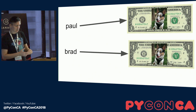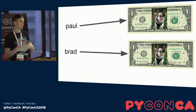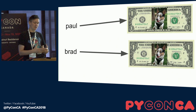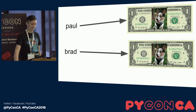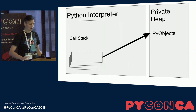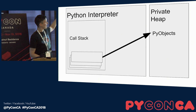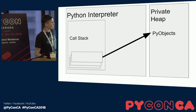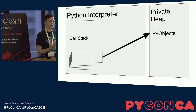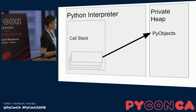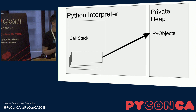To understand why this bug occurred only with bigger numbers, I'm going to talk about how the Python interpreter works and how memory is managed in Python. We have the Python interpreter with a call stack. Each frame represents a function, and every variable we have points to an object on the private heap. The private heap is a big memory store, and everything that's an object in Python exists there.